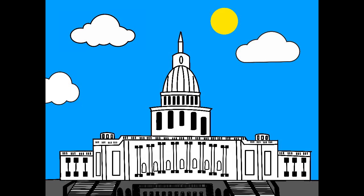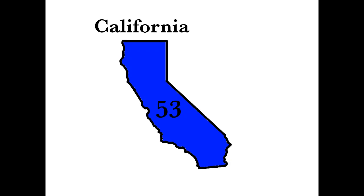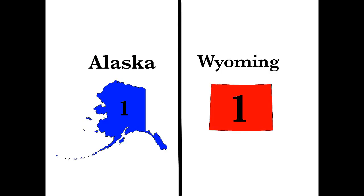Altogether, there are 441 representatives and 6 of them are non-voting. The amount of representatives depends on the amount of population in that state. For example, California, the most populated state, has 53 representatives, while a small state like Alaska or Wyoming only has one representative.